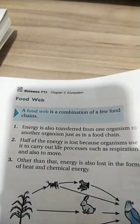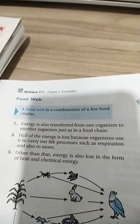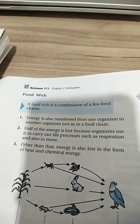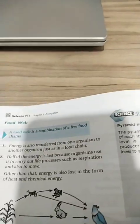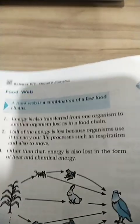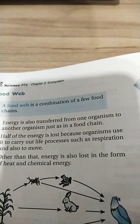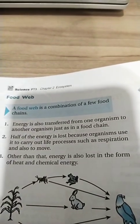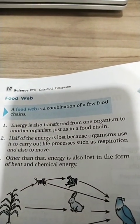A food web is a combination of a few food chains. Energy is also transferred from one organism to another organism, just as in the food chain.